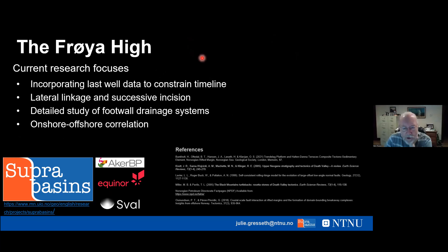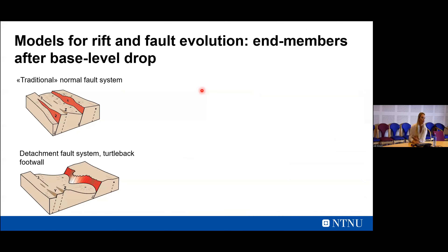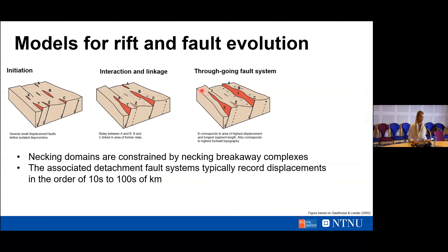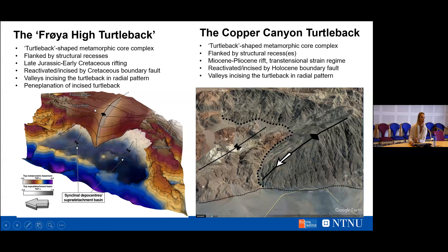Mark Rowan asks: can you compare the scales between the Copper Canyon example and the Norwegian margin example? At its broadest perpendicular to the direction of extension, the Freyja turtle back is approximately 45 kilometers wide, but the Copper Canyon turtle back is about 3.7 kilometers. So it's a completely different scale.